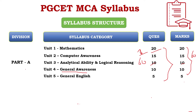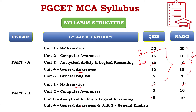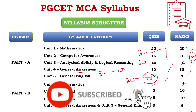In Part B, from Unit 1 (Mathematics) there are 7 questions at 2 marks each, totaling 14 marks. From Unit 2, 5 questions at 2 marks each for 10 marks. Unit 3 also has 5 questions for 10 marks. Units 4 and 5 have 3 questions each for 6 marks. Part B has 20 questions totaling 40 marks. Combined, Parts A and B give 80 questions for 100 marks total — Part A is 60 marks and Part B is 40 marks. Now let us understand what is covered in each unit.